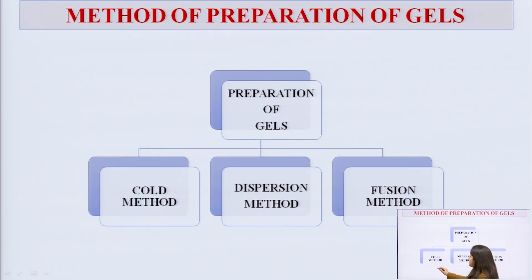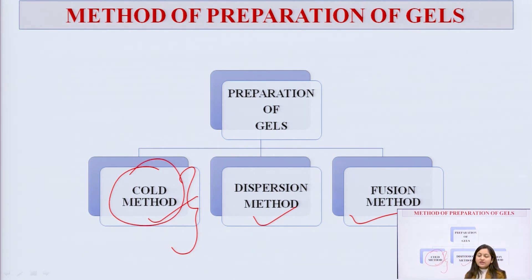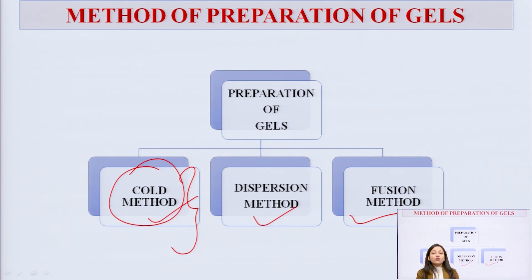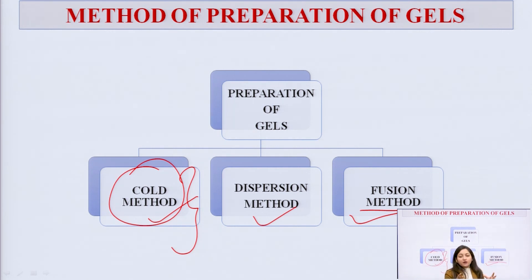Methods of preparation of gels include: the cold method, the dispersion method, and the fusion method. In the cold method, all ingredients are mixed at a temperature that does not exceed a particular value — simple trituration and mixing under cold conditions. The dispersion method is similar to the incorporation method; solid medicament is incorporated into a suitable base using geometric dispersion to avoid inaccuracy. In the fusion method, the base is melted, the API and all excipients — buffers, flavoring agents — are added, and then the mixture is rapidly congealed to avoid microbial attack.